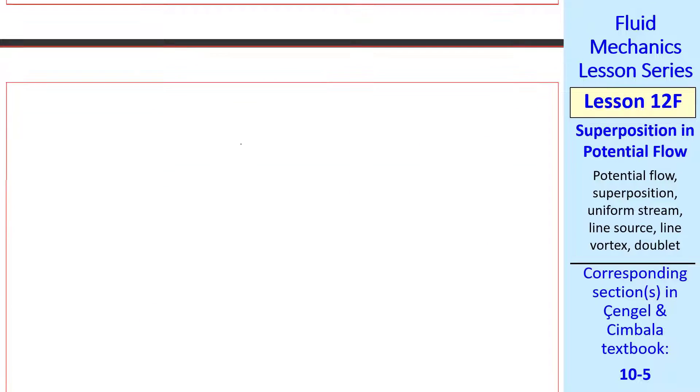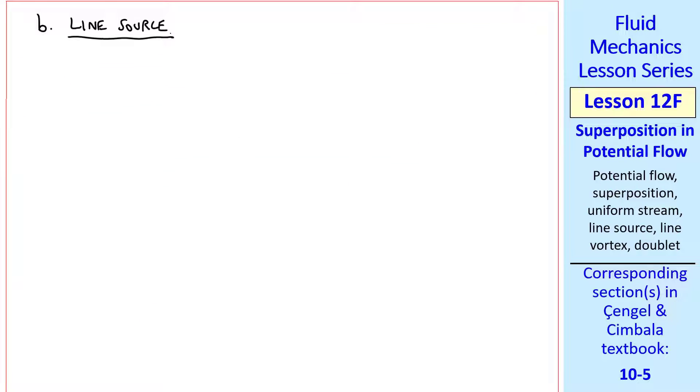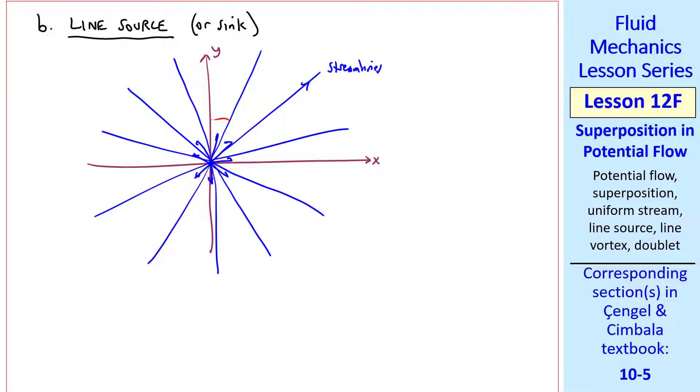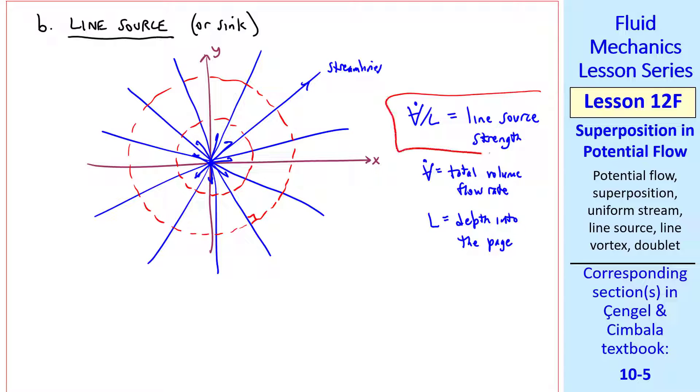Now let's consider another building block flow, namely a line source, or sink if the flow goes the opposite way. If our line source is at the origin, there's a line along the z-axis from which fluid spews out in all directions. So the streamlines are rays emanating from the origin, and the equipotential lines, in order to meet at 90 degree angles, are circles. We'll let v dot over L be the line source strength, where v dot is the total volume flow rate, and L is the depth into the page. So this line source strength is the volume flow rate per unit depth.